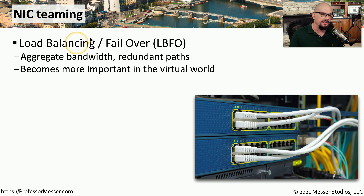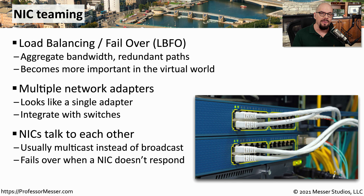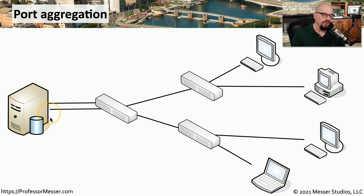Another method of providing fault tolerance and high availability in the data center is to use LBFO, or Load Balancing Failover. This allows you to have multiple links between devices. These multiple links will not only aggregate the bandwidth between those devices, but if you lose one of those connections, the other connection is there for high availability. This is usually implemented by having multiple physical network interface cards in a device, but all of those cards are bound together to look like one single very large interface. This is usually integrated with the switches you're using so that they can properly forward traffic to the correct network interface card. These network interface cards are constantly sending hello messages to each other, and if an interface card stops responding, we know that card may not be available and we can take it offline and use the remaining network interface cards instead.